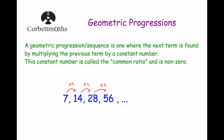One thing to note is that the sequence can get bigger — obviously if you are multiplying by 2, 3, 4 and so on. It can also get smaller, so if you are multiplying by a fraction such as a half, a quarter, or a third, it can get smaller.